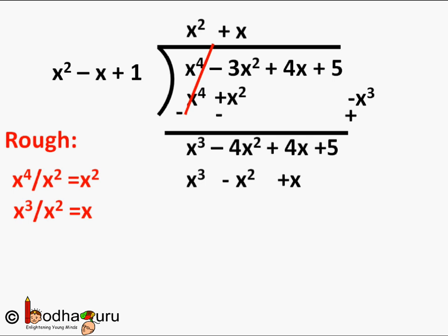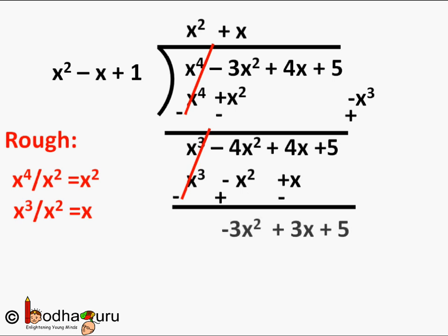We get x³ minus x² plus x, written below the remaining dividend. Now we subtract: x³ minus x³ equals 0; minus 4x² minus of minus x² gives minus 4x² plus x² which equals minus 3x²; 4x minus x equals 3x; and plus 5 comes down. So the remaining dividend is minus 3x² plus 3x plus 5.